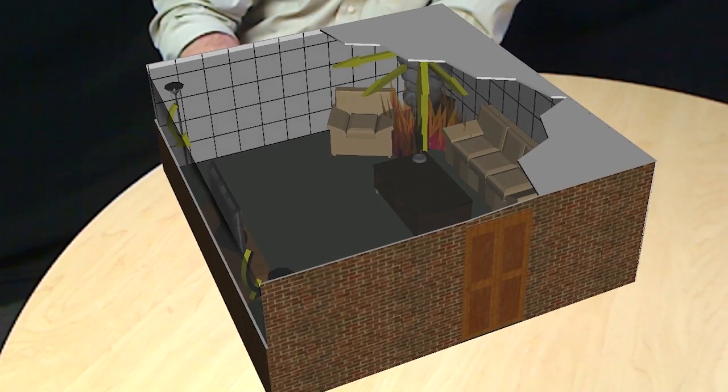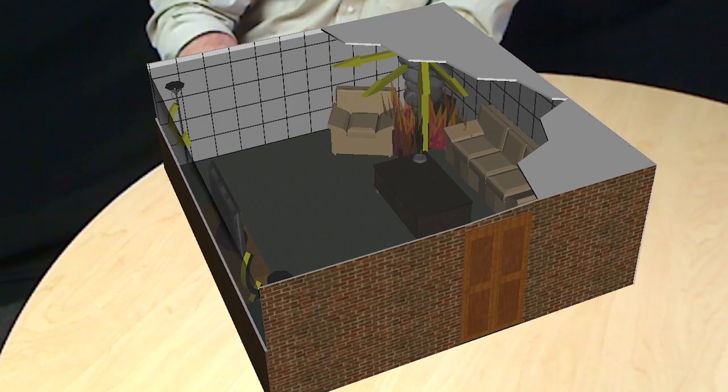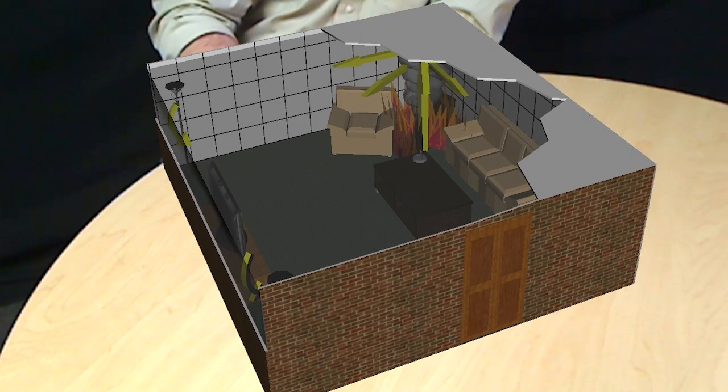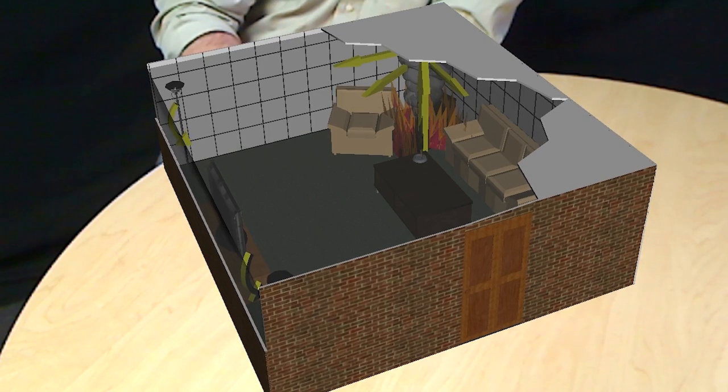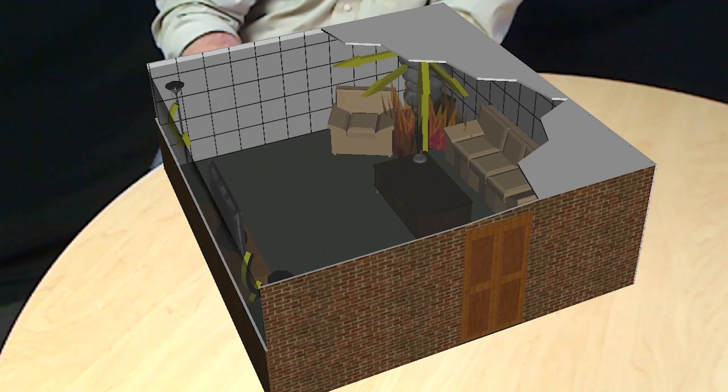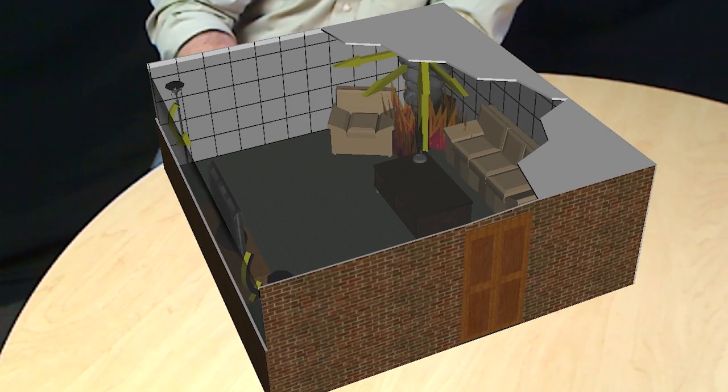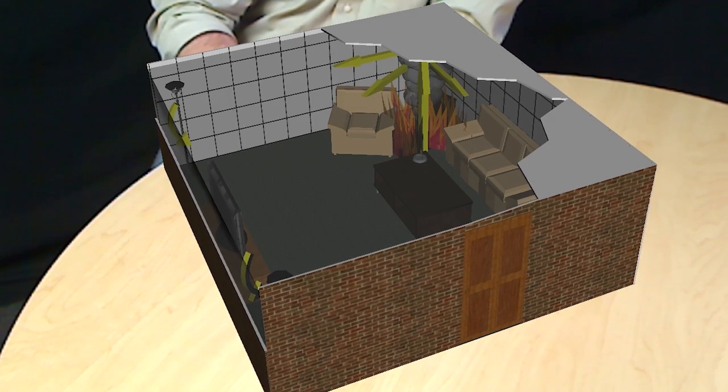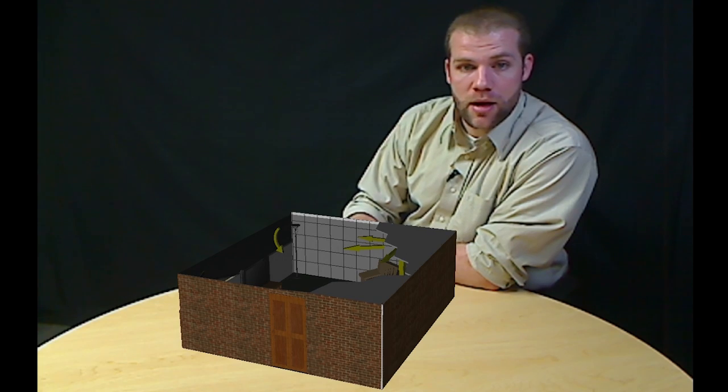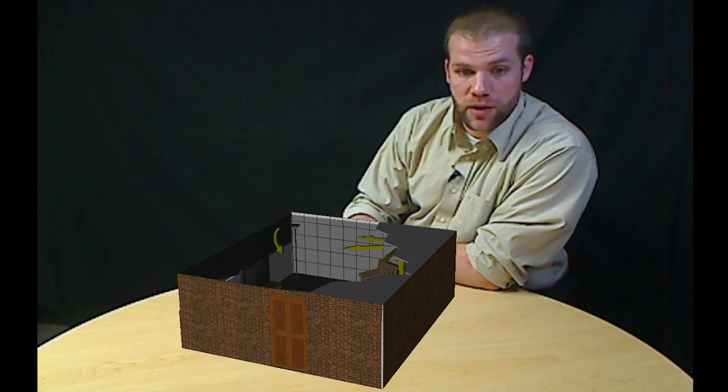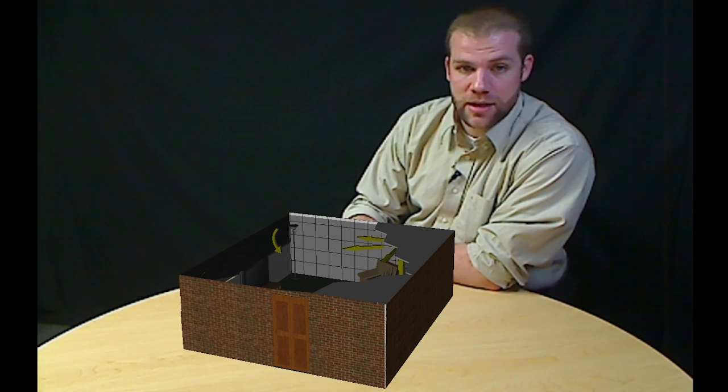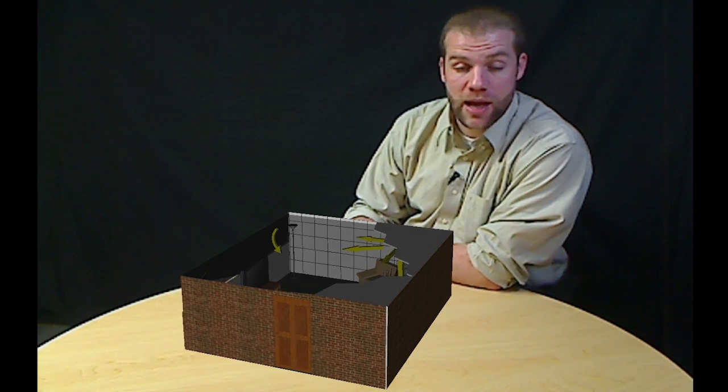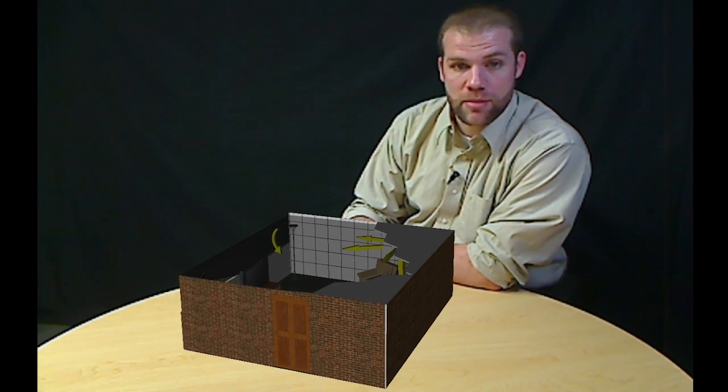And what this means to us is that as that upper layer starts to develop, we start to see involvement of additional fuels and more and more smoke developing. And if that smoke has nowhere to go, it's going to continue descending. As soon as that upper layer starts to descend over the top of our combustion area, our flaming combustion, then we start to see a decrease in combustion. That decrease in combustion will be because we have no oxygen to support that flame anymore.